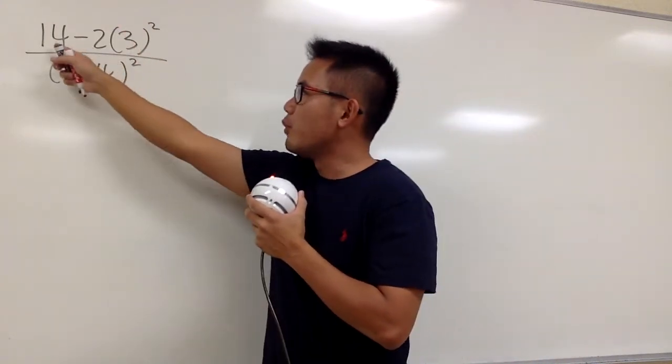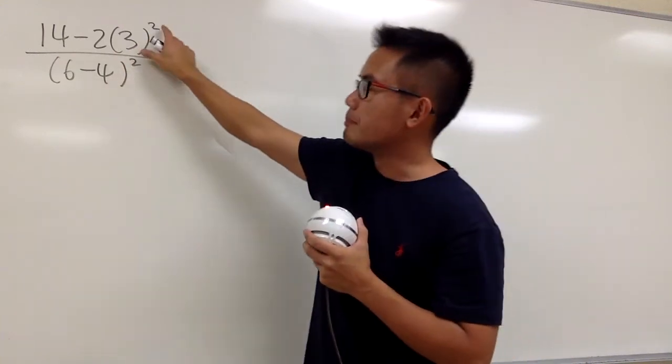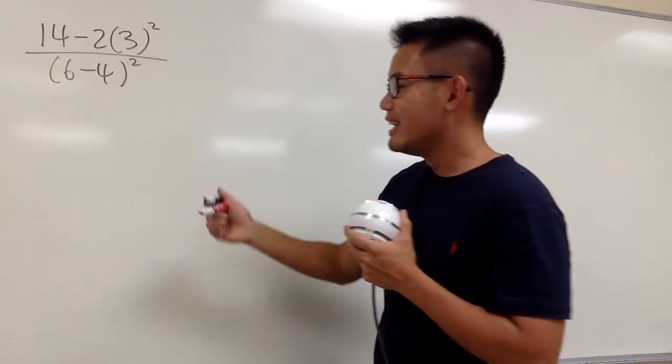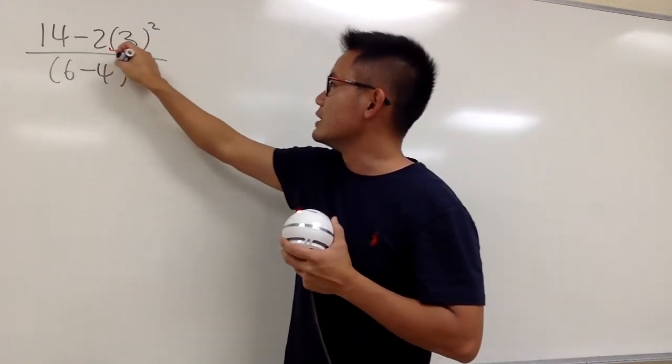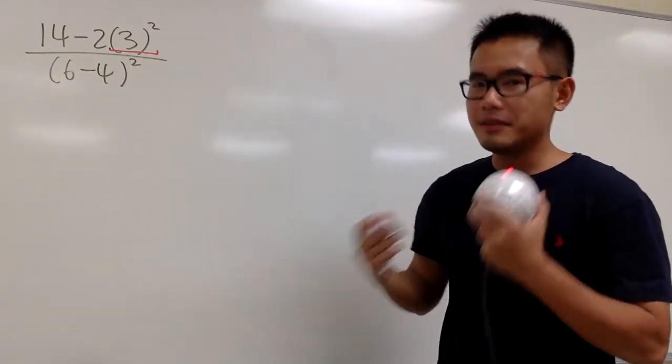On the top, we have 14 minus 2 times 3 squared. By the order of operation, we have to work out the power, and this is also called the exponent. We have to do that first.